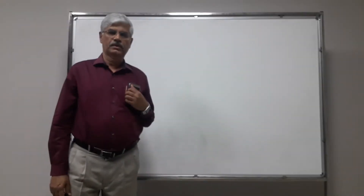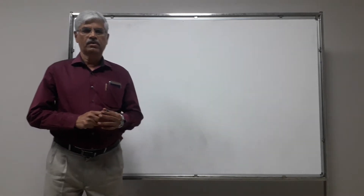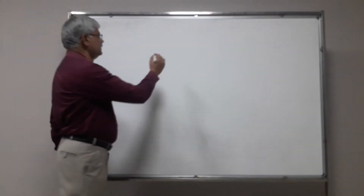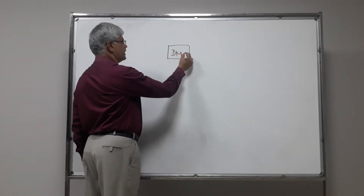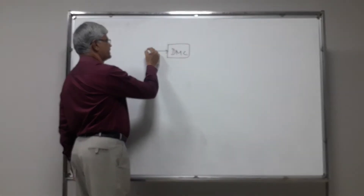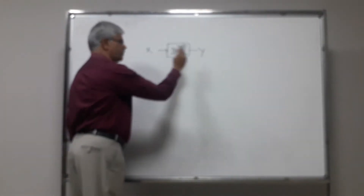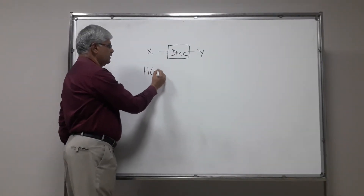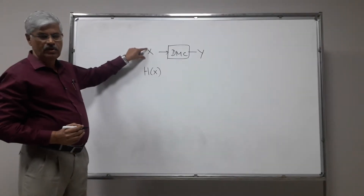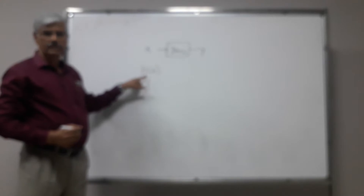Let us continue our discussion. As we have pointed out earlier, we are transmitting information to a discrete memoryless channel. The input is x and the output is y — both are vectors. Given the source x with certain symbols, we can always calculate the entropy of the source as H of x.